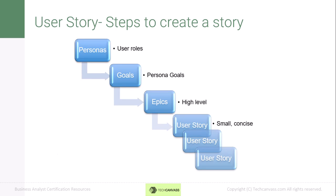Now let's cover the steps required to create a good user story. Since everything revolves around the user, it is first essential to identify the user roles, and then the goals and targets we are trying to achieve. Once these are identified, we can identify the epics, which are high-level statements about the required functionality. After this, we can create user stories, including all this information in small but comprehensive statements.